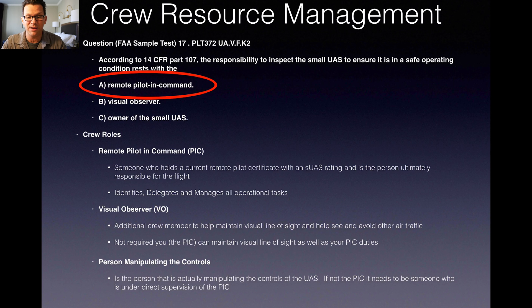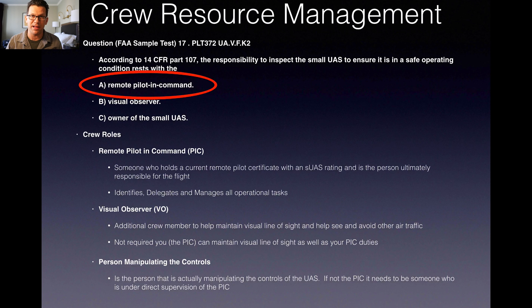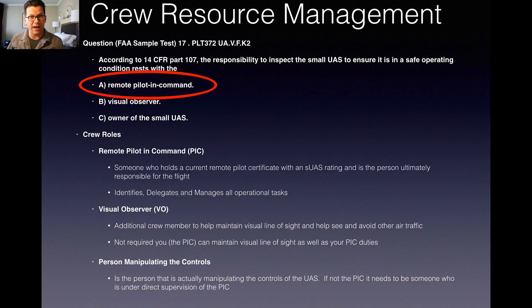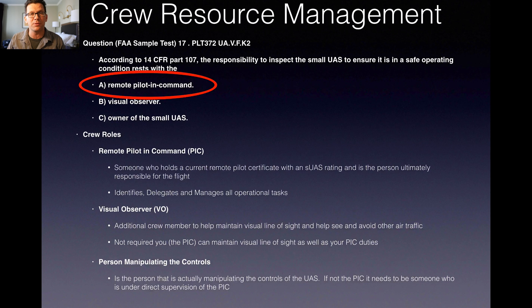A visual observer is an additional crew member to help maintain visual line of sight and help see and avoid other air traffic. A visual observer isn't required, as long as the PIC can maintain visual line of sight as well as conduct the remote piloting command duties. Then there's the person manipulating the controls — this is the person actually manipulating the remote control. This can be the remote PIC, or it can be somebody under the supervision of the remote PIC. So you could be hired as the remote PIC for a company that has their own cinematographer or drone pilot, brief them on safety procedures, lay out an operational plan, and directly observe them, able to take over if needed to maintain a safe operation.